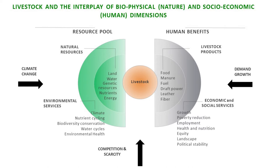That picture is not complete because on the natural resource side, environmental services also come into play — including climate regulation, nutrient cycling, biodiversity conservation, water cycles, and environmental health. On the human side, we demand not just those commodities — we also want economic growth, poverty reduction, employment, health and nutrition, gender equity, landscape maintenance, and even political stability. Everything we want from livestock.